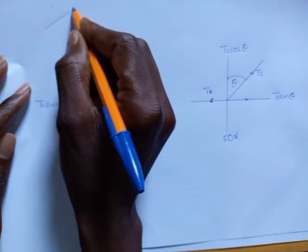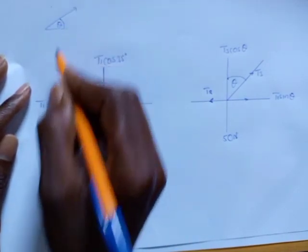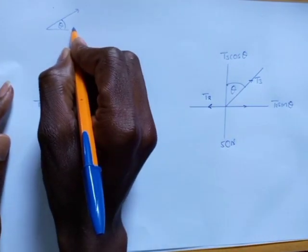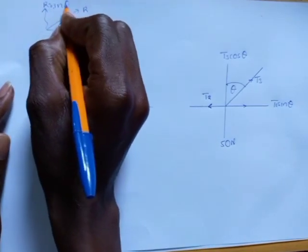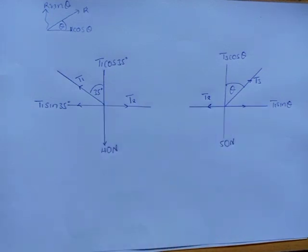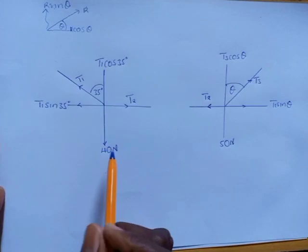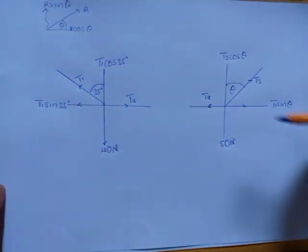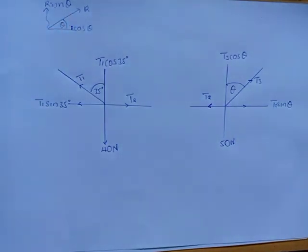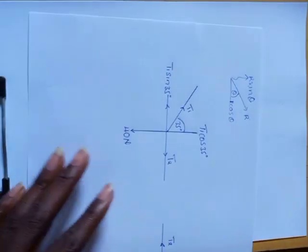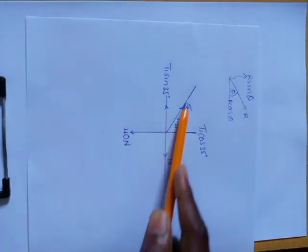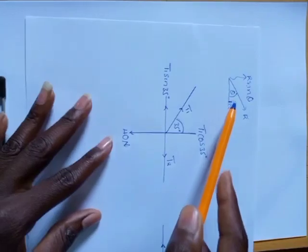Getting back to what vectors are telling us: if you have a vector oriented at a certain angle, the component which is cut by the angle must have an identity of cosine. So this one is going to have cosine. If you try to resolve the resultant, R sin theta applies to the perpendicular component. This is just a simple reminder that applies to these two diagrams.